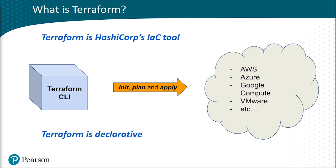Terraform lets you define resources and infrastructure in a very human-readable way. It's declarative, meaning the configuration files are not explicit. Terraform will take the code and interpret it, doing a lot of the back-end work for you. In essence, what you get is simpler code.